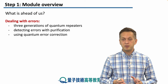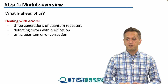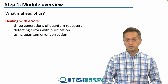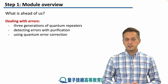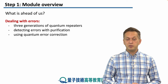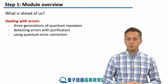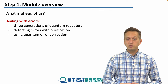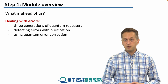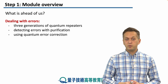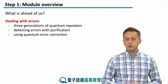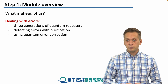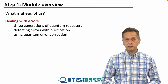We're going to start with describing the various errors that can occur in quantum networks and how to deal with them. The first lesson will be on the three generations of quantum repeaters. Then we're going to look at how we can detect errors using entanglement purification, and we'll conclude this block of three lessons by looking at how quantum error correction can not only detect, but also correct these errors.